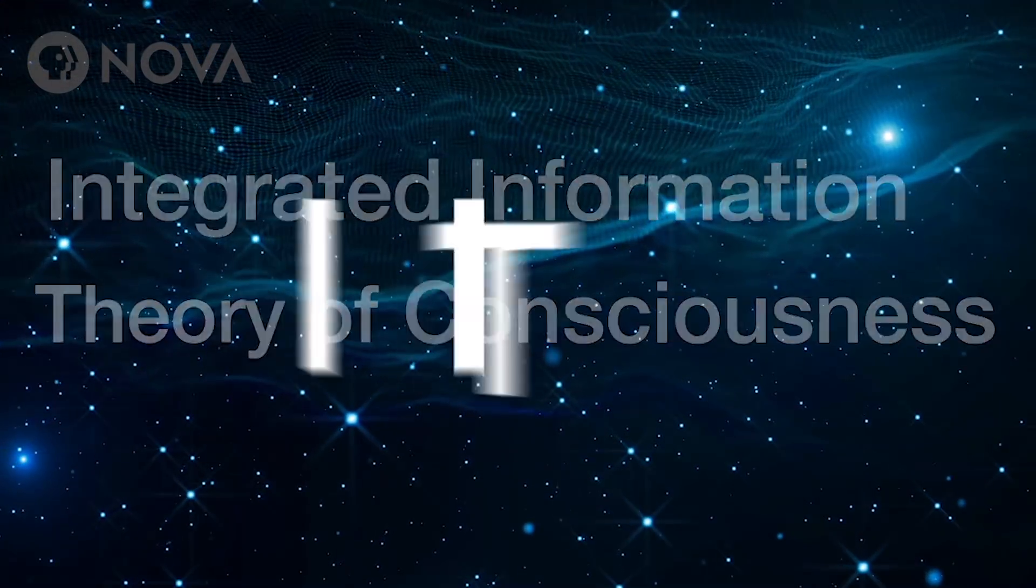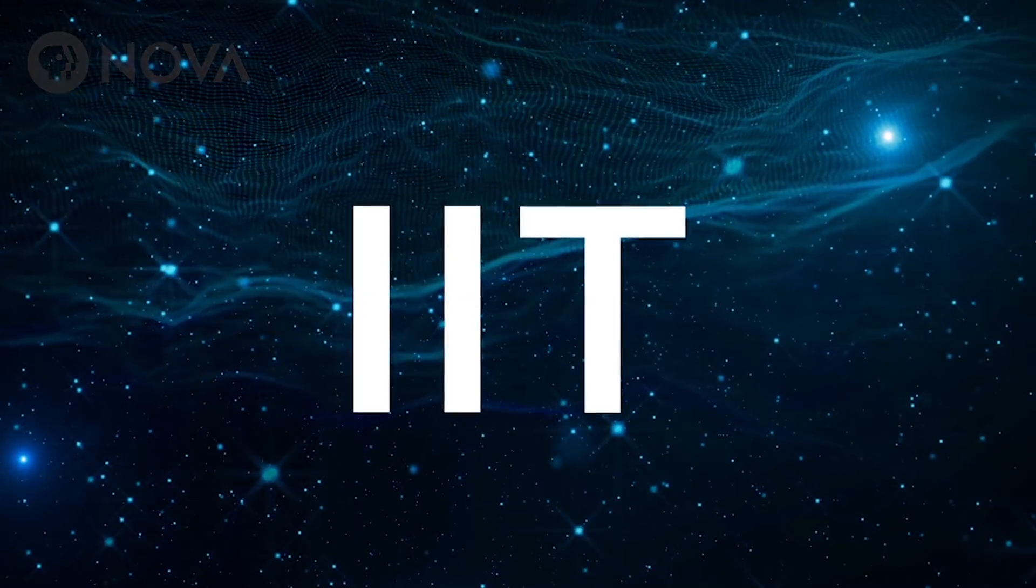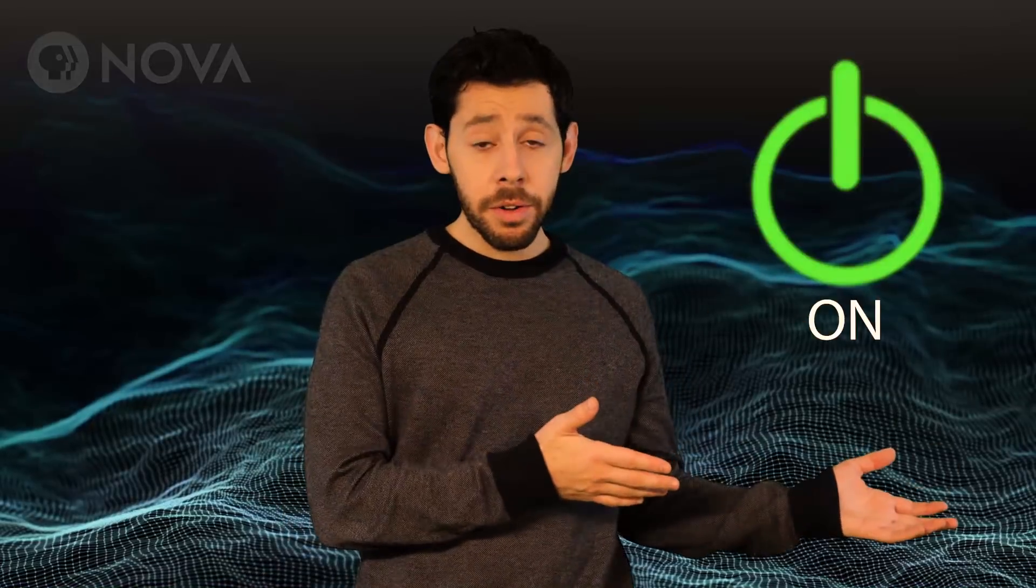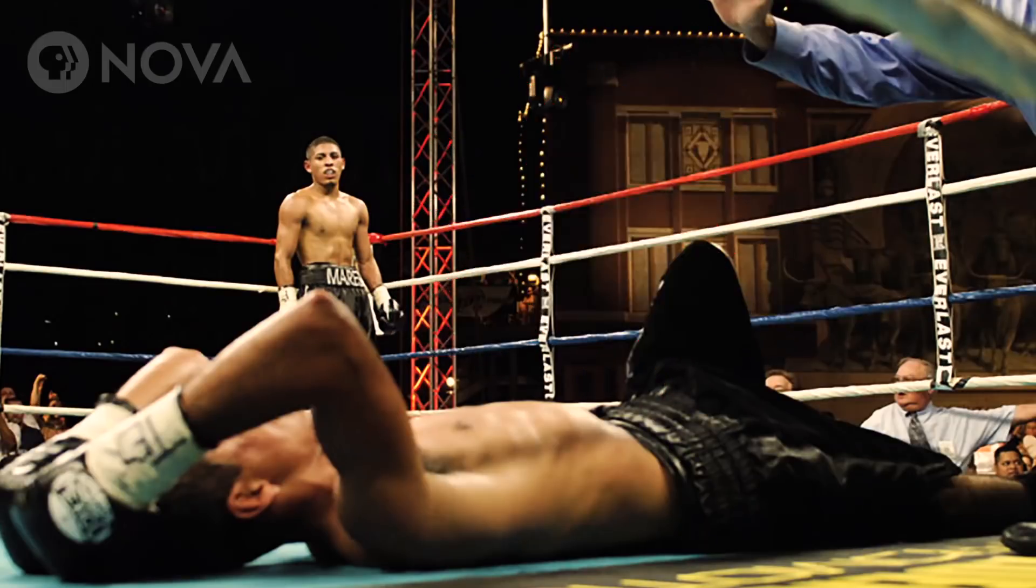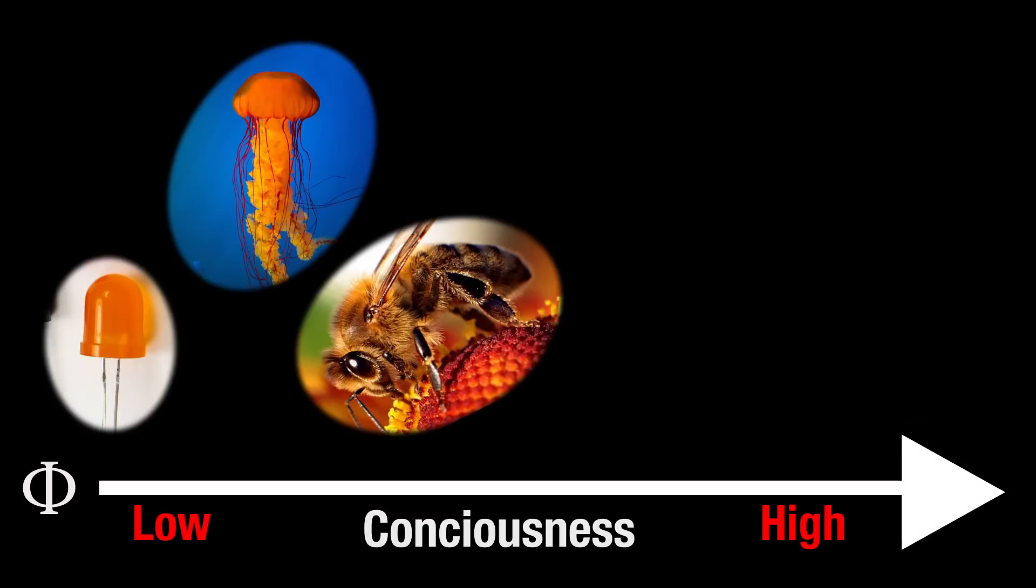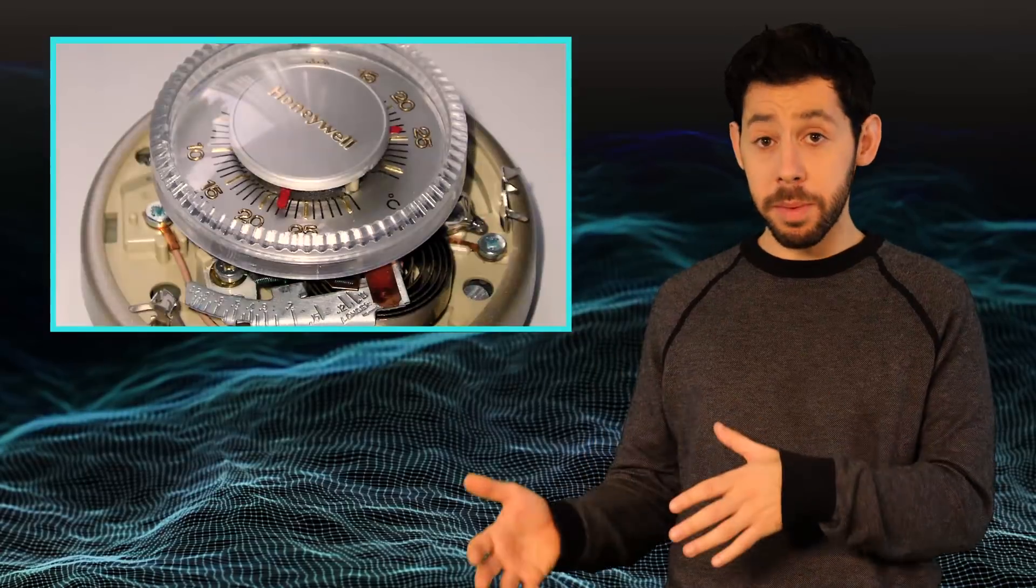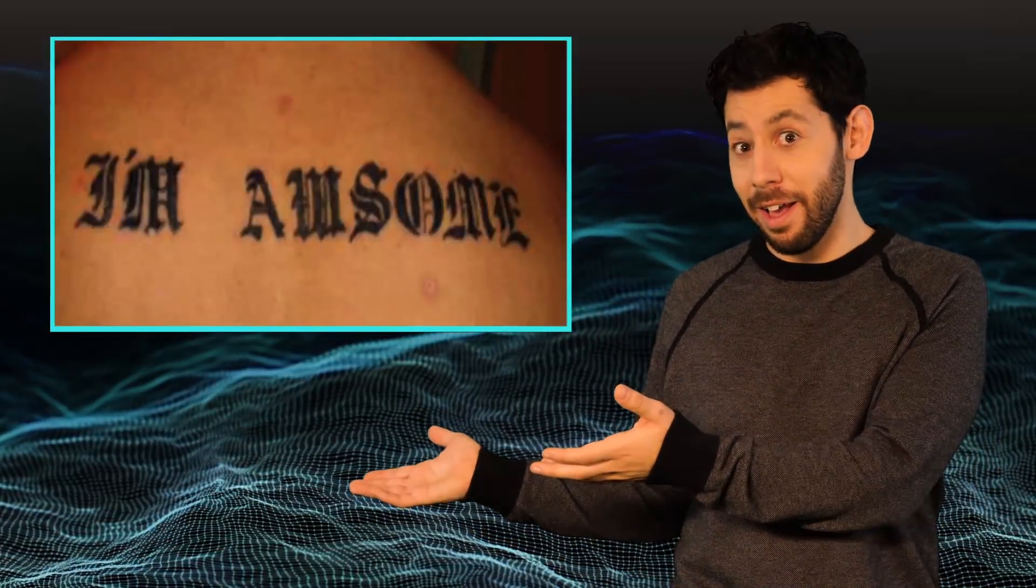This theory, called IIT for short, says that the more interconnected or integrated a machine or brain is, the more conscious it is. We usually think of consciousness as either being on or off, like is she conscious or he's out cold. But in IIT, consciousness is a spectrum, a continuum, like this iguana. It's conscious, not as conscious as you, but more conscious than, say, a thermostat, or this guy.